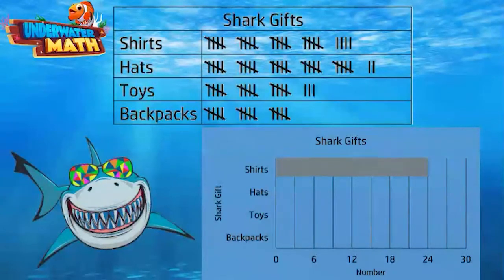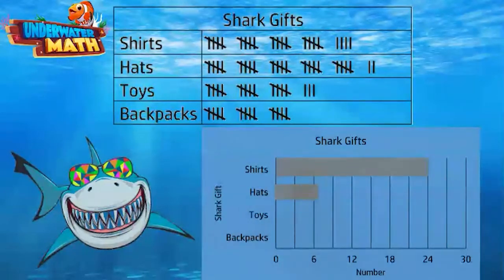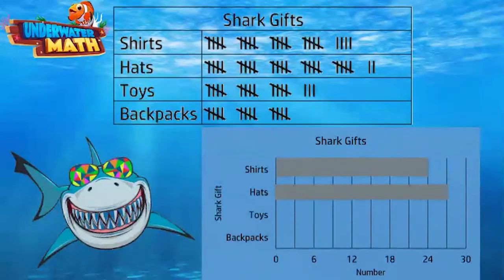Next: 5, 10, 15, 20, 25, 26, 27 — shark hats were sold. Now I will draw a bar that goes to the 27 line. The next one is 5, 10, 15, 16, 17, 18 — shark toys sold, so we will draw a bar to the 18 line.